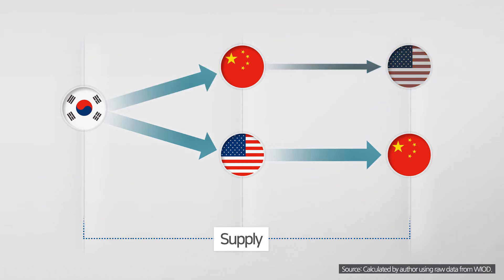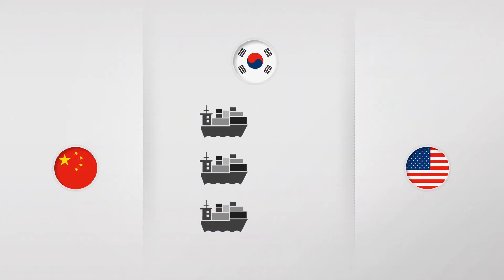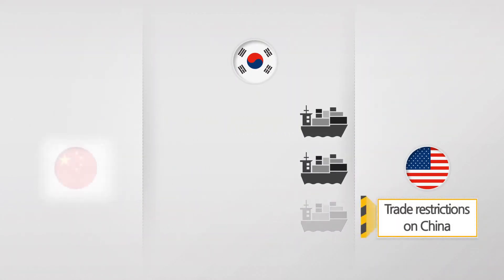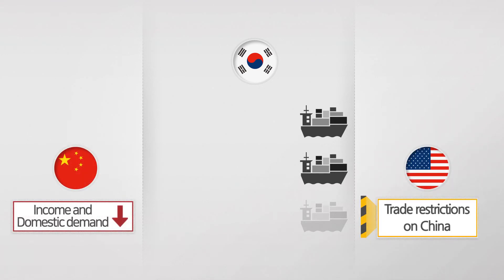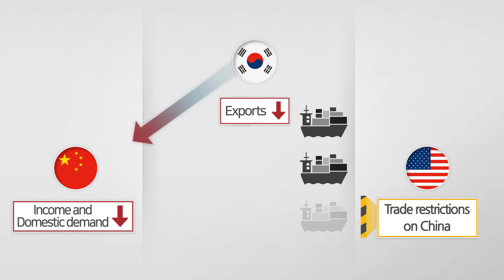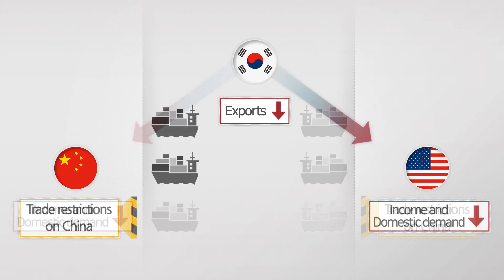Therefore, the negative impact from a decline in China's exports to the U.S. due to trade restrictions will be much more profound. As for the demand side, trade restrictions will reduce China's exports to the U.S., which will in turn lower its income and domestic demand. Ultimately, this will reduce Korea's China-bound exports as they are dependent on China's domestic demand. The same applies for China's trade restrictions on the U.S. — that is, there will be a decrease in Korea's U.S.-bound exports.